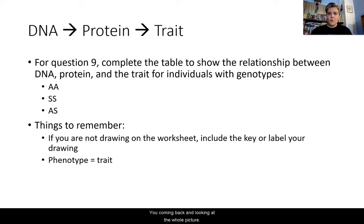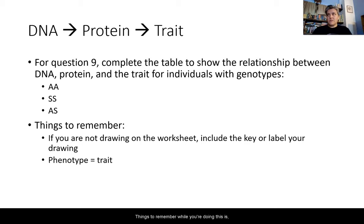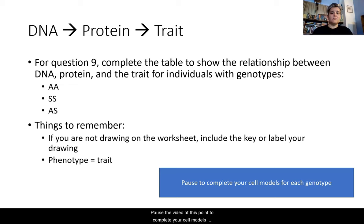Coming back to the whole picture for question nine, we're looking from DNA to protein to trait. Complete the table to show the relationship between DNA, protein, and trait for individuals with genotypes AA, SS, and AS. If you're not drawing on the worksheet, include keys or labels for your drawings. Remember: phenotype is the trait, genotype is the gene. Pause the video to complete your cell models for each genotype.